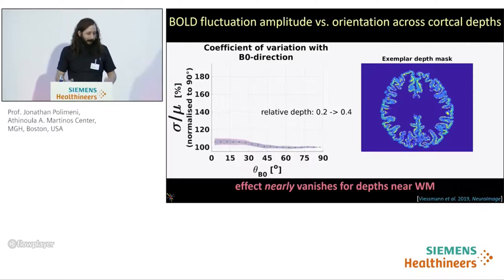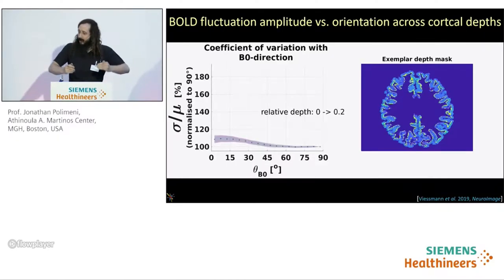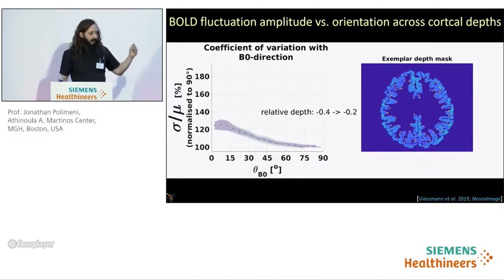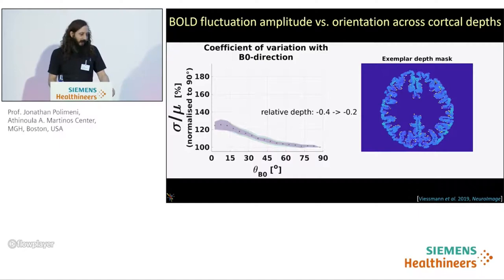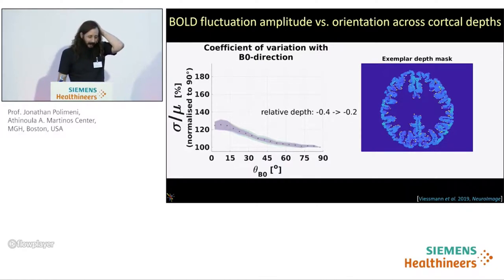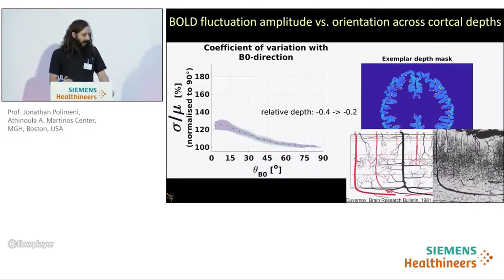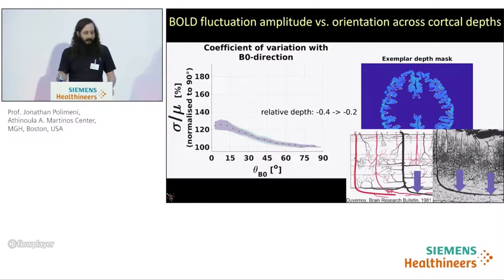Then something interesting happened. Considering voxels touching the gray matter–white matter border and pushed into the superficial white matter, the effect rebounded. This is consistent with some influence of vessels running tangential to the cortical surface, but seen at voxels sampled very far from the pial surface. We think this is caused by the classic network of large veins within the superficial white matter, known to run tangentially and hug the gray-white border.